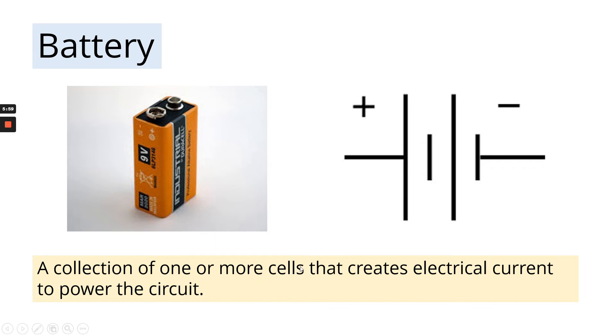So a battery is a collection of one or more cells that creates electrical current to power the circuit. But what is a cell? This long line and this short line, those two together, that is a cell. As soon as you've got more than one of these pairings next to each other, it becomes a battery. The more cells in a battery, the more electrical current it can generate.